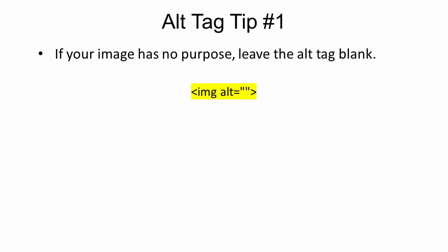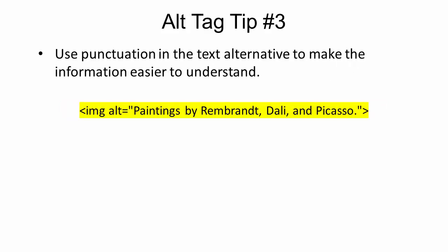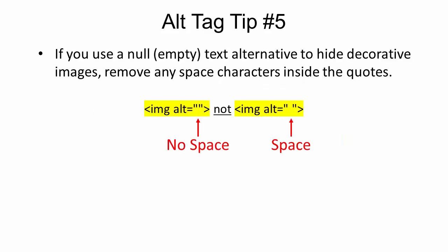Alt tag tip number one: if your image has no purpose, just leave the alt tag blank. Tip number two: keep your alternative text as concise as possible and put the most important information at the beginning. Tip number three: use punctuation in the text alternative to make the information easier to understand. Tip number four: add space characters in the alt text when there's no space character between the image and adjacent text, to avoid words running together when read by a screen reader. Number five: if you use a null or empty text alternative to hide decorative images, remove any space characters inside the quotes, as some assistive technologies will announce the presence of an image if space characters are detected between the quote marks.